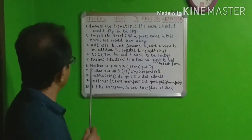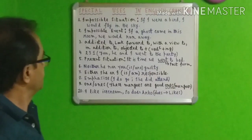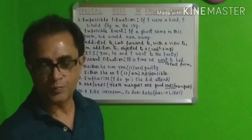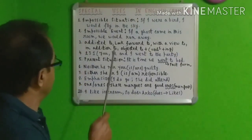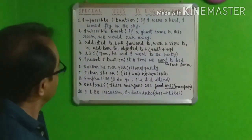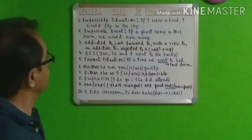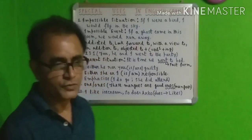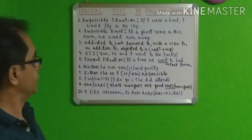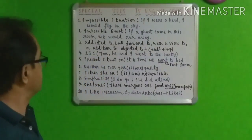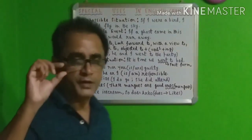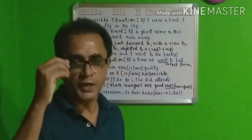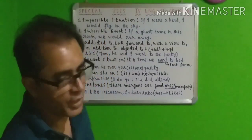What is the first one? Impossible situation. Impossible situation means a situation which cannot possibly happen in real life. For example: 'If I were a bird, I would fly in the sky.' But you know that I cannot be a bird, so this is an impossible situation. Whenever you find such an impossible situation, you have to use 'were' with any kind of subject.